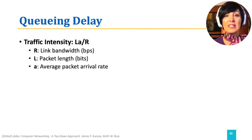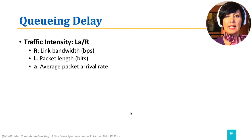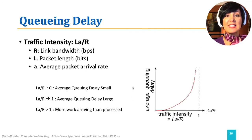If the bandwidth capacity of the outgoing link is R, and the average length of the packets placed on the queue is L, and the average packet arrival rate is A, we can compute traffic intensity as LA over R. Traffic intensity can help us estimate the average queuing delay.